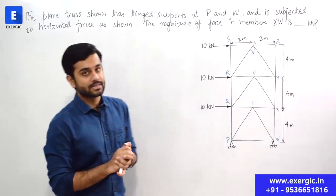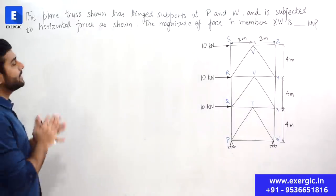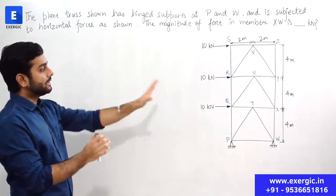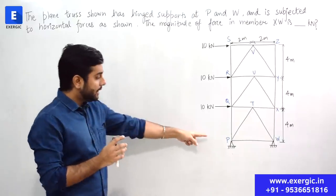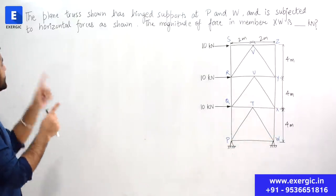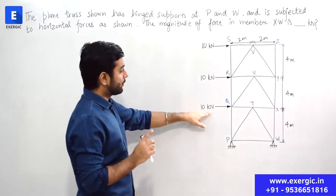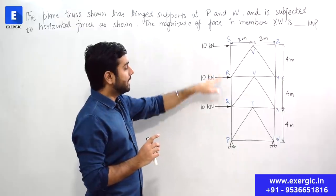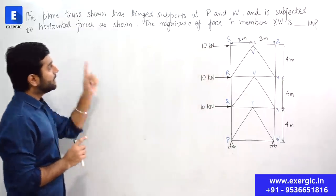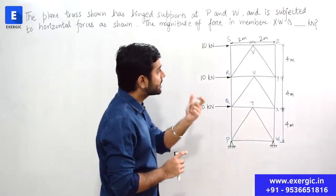Have a look at the question. It says the plane truss shown has hinged supports at P and W. You can see the plane truss with hinged supports at P and W, and it is subjected to horizontal forces as shown — three horizontal forces acting at Q, R, and S. The question asks: what is the magnitude of force in member XW in kilo Newtons?